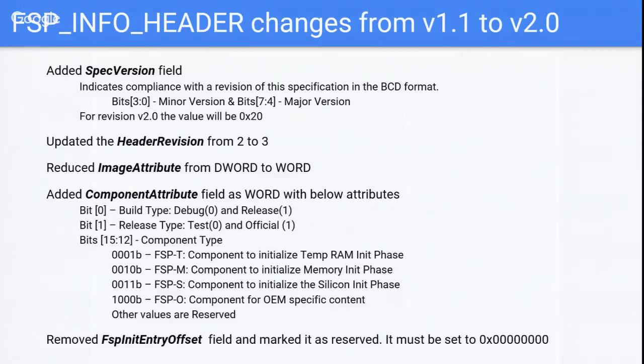The FSP info header holds key information in the binary. Parsing is pretty much the same as FSP 1.1. The key difference is that in earlier FSP implementations, the FSP info header was at the bottom of the image. In FSP 2.0, each component—T, M, and S—carries its own info header, so you can treat each as an independent FSP binary. The header will indicate which phase or component it represents.